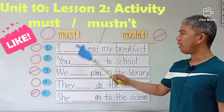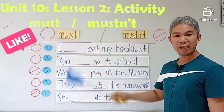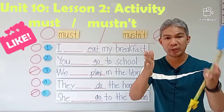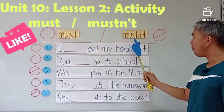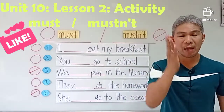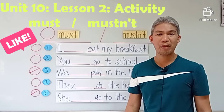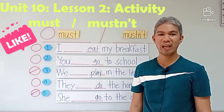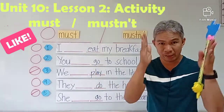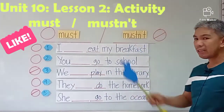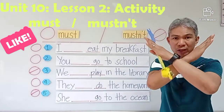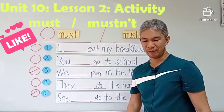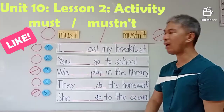Remember that must — it is important to do, so you need to do or you must do. And mustn't — it is important as well, but you are not going to do it. You mustn't do, or don't do. Did you get it?